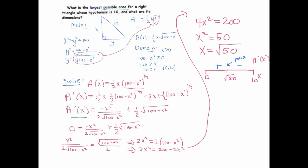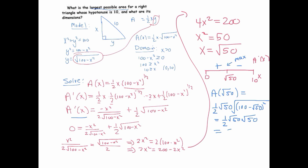Now let's find the actual maximum area. A(√50) = ½ · √50 · √(100 − (√50)²) = ½ · √50 · √(100 − 50) = ½ · √50 · √50 = ½ · 50 = 25.